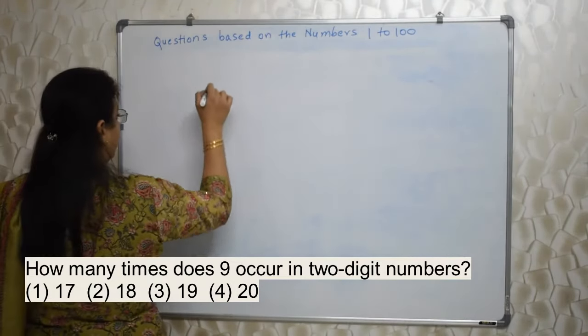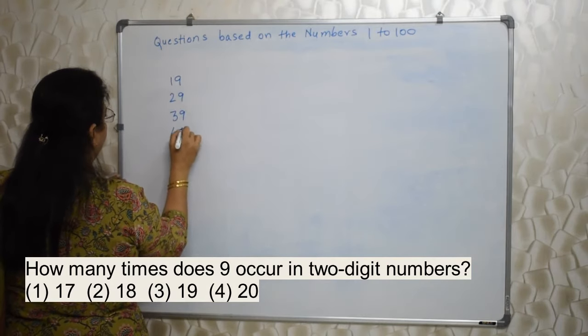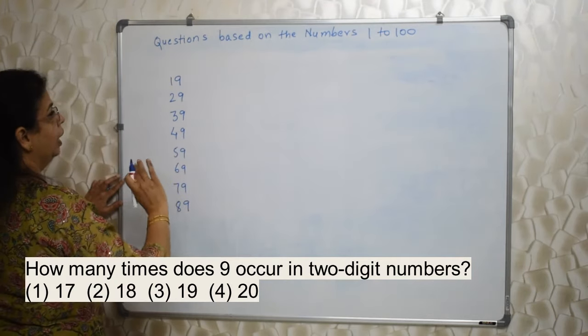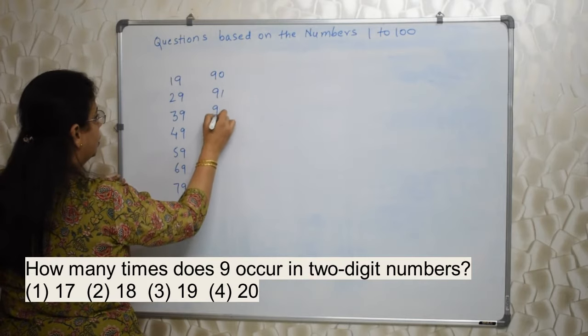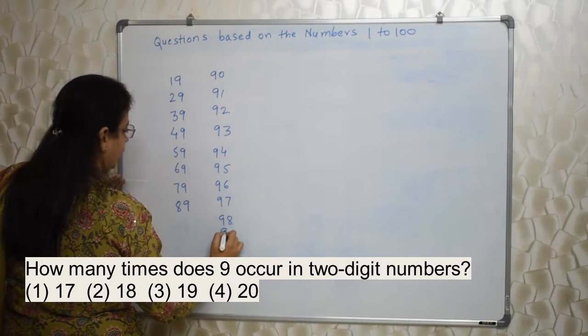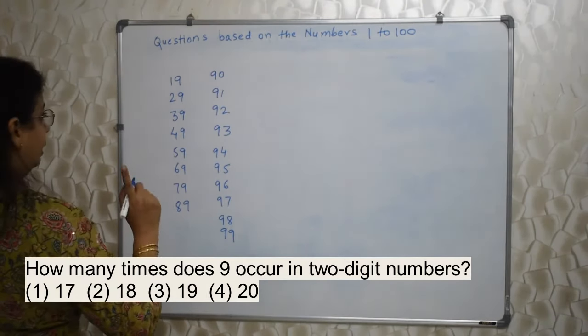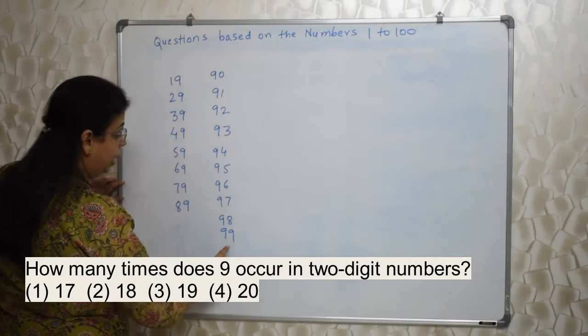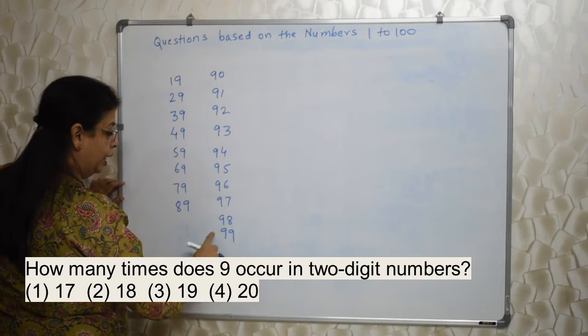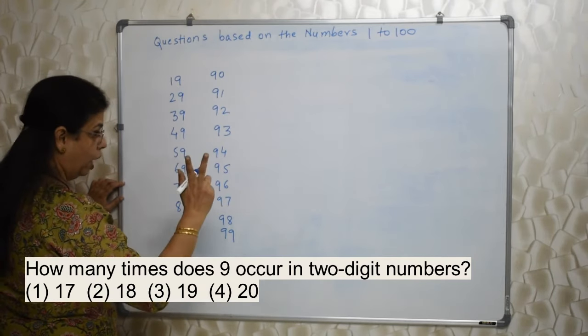Two digits, mind you. Only number 9 will not come because that is one digit. So we have to start from 19, then 29, 39, 49, 59, 69, 79, 89. Be careful, just don't write 99 and go ahead. 90 and all these numbers will also come because they also have 9 in them. Don't forget 98 and then 99.